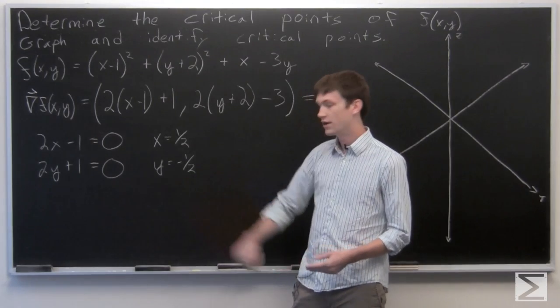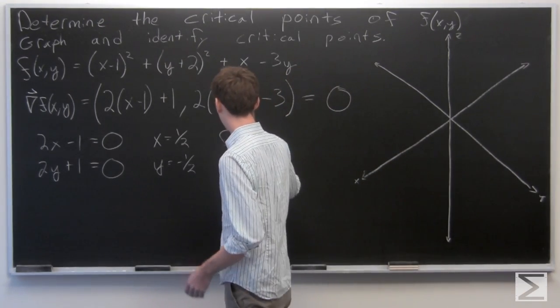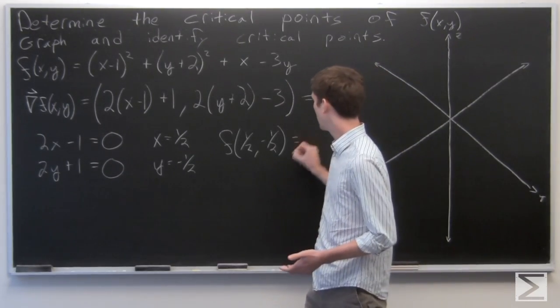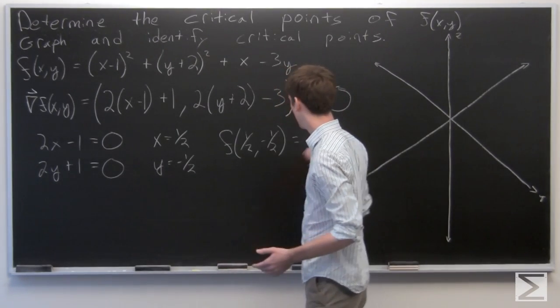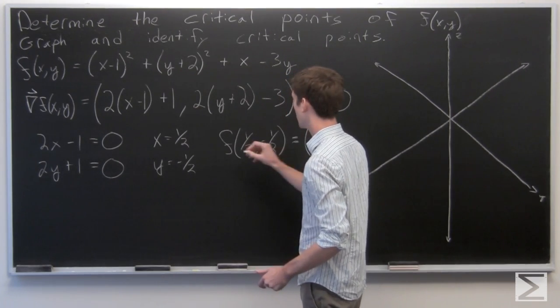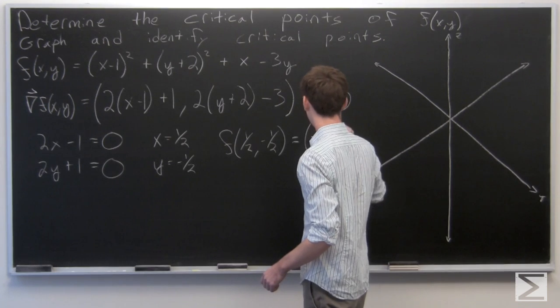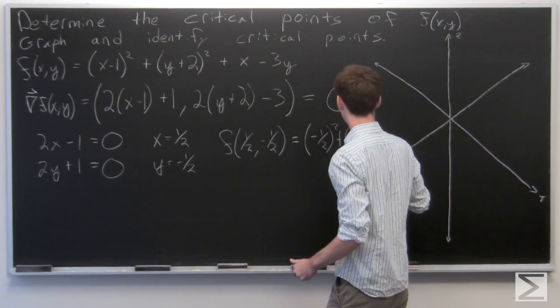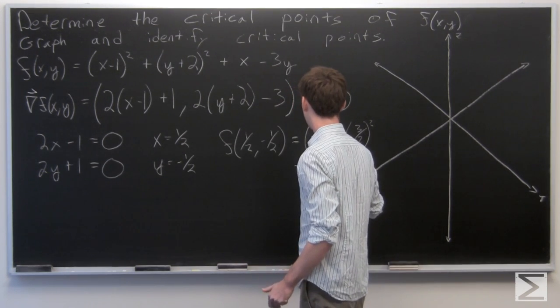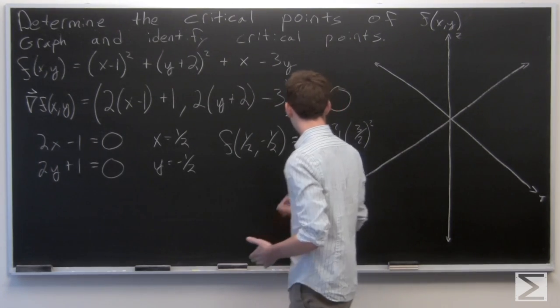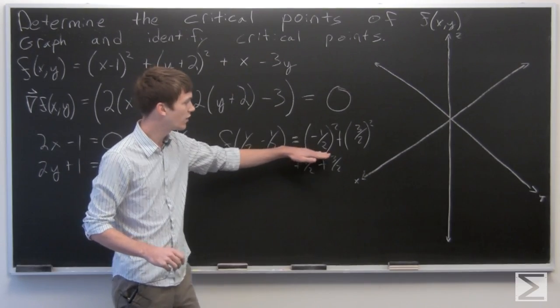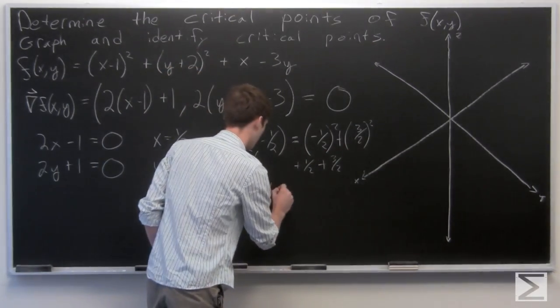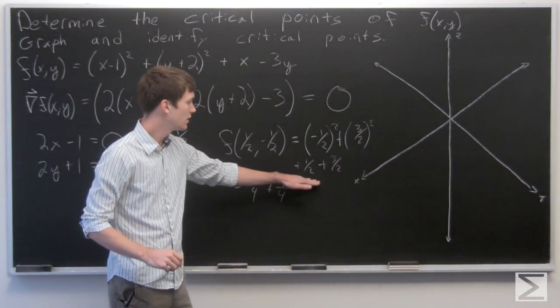So when x equals 1/2 and y is negative 1/2, we have a critical point. So f of (1/2, -1/2) is our critical point. We can plug that in and see what our z value is. So we get 1/2 squared, which is 1/4, plus 3/2 squared plus 9/4, and plus 2.